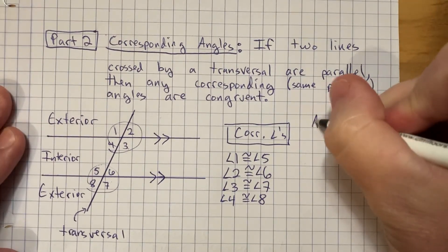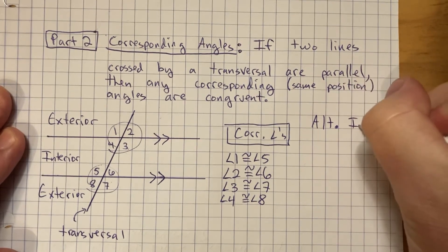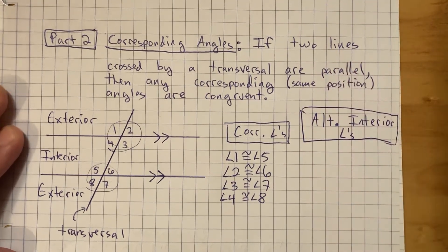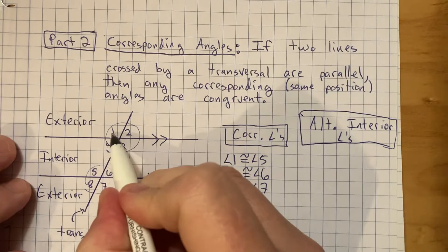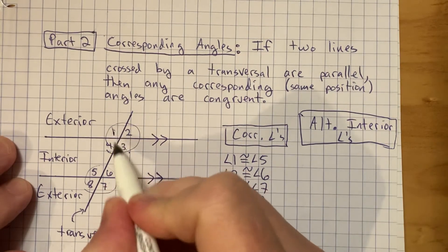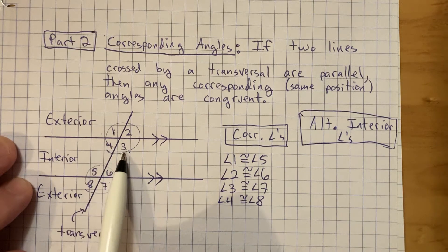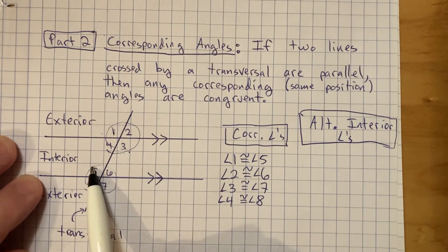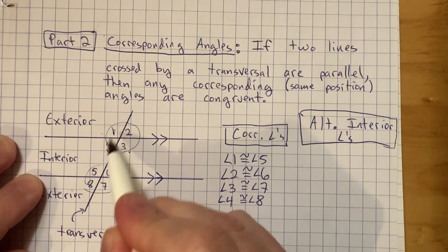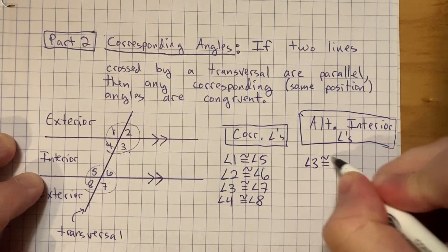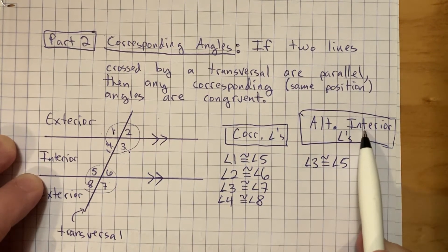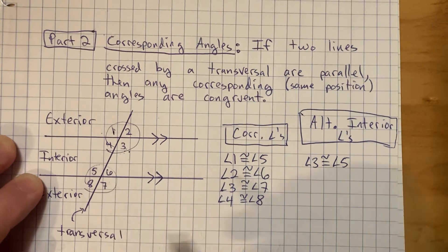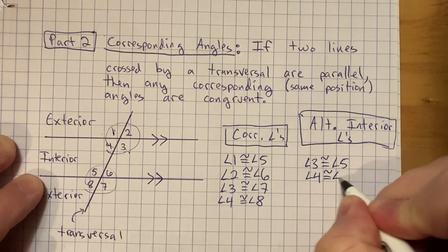There are other kinds of angles too. There are alternate interior angles, and alternate interior angles are also congruent. Here's why: angle one and angle three are congruent because they're vertical angles. I just showed you that angle one is the same as angle five. So angle three and angle five have to be the same as well — since one equals three and one equals five, then angle three is congruent to angle five. They're on the interior and 'alternate' means you jump over the line. The other alternate interior angles are angles four and six — angle four is congruent to angle six.